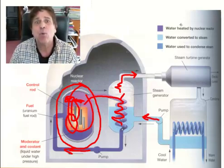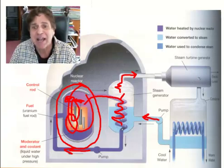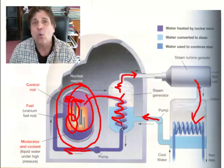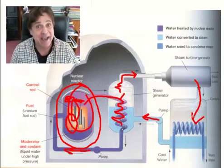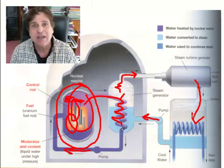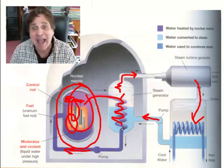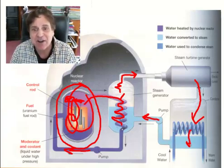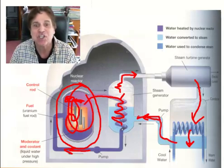Once the steam goes through the turbine, it collects back here and then it's cooled down. It could be cooled by air or by water. Then it changes back into water, collects down at the bottom of this tank, and it is pumped back into the system again.